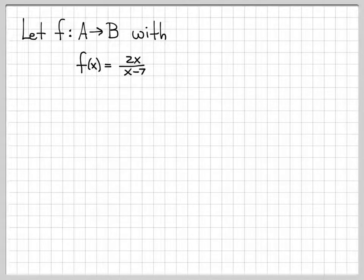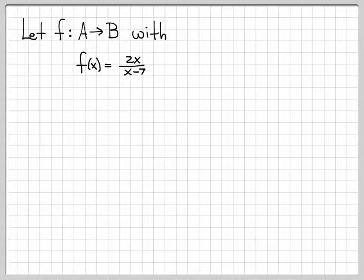We're going to work another problem where we work with a very specific function. In this case, the function is f(x) = 2x/(x-7). This is a function from sets A to B, and we're going to show that this is a one-to-one and onto function.